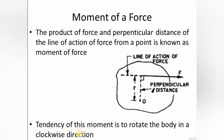Now for today's topic: the moment of a force. Consider a body acted upon by a force — the path of the force is called the line of action. About a point O, the moment of a force is defined as the product of the force and the perpendicular distance from point O to the line of action. This moment has a tendency to rotate the body — clockwise if the force acts in one direction, and anti-clockwise if the force acts in the opposite direction.